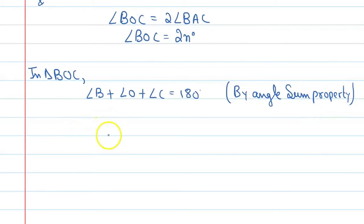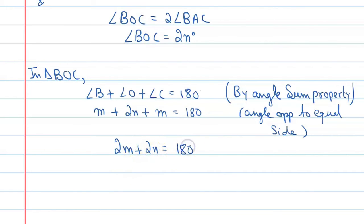So angle B is equal to m, plus angle O is equal to 2n, plus angle C is equal to m, equals 180 degrees. So 2m plus 2n is equal to 180 degrees. If we divide by 2, then m plus n is equal to 90 degrees. This is the value.